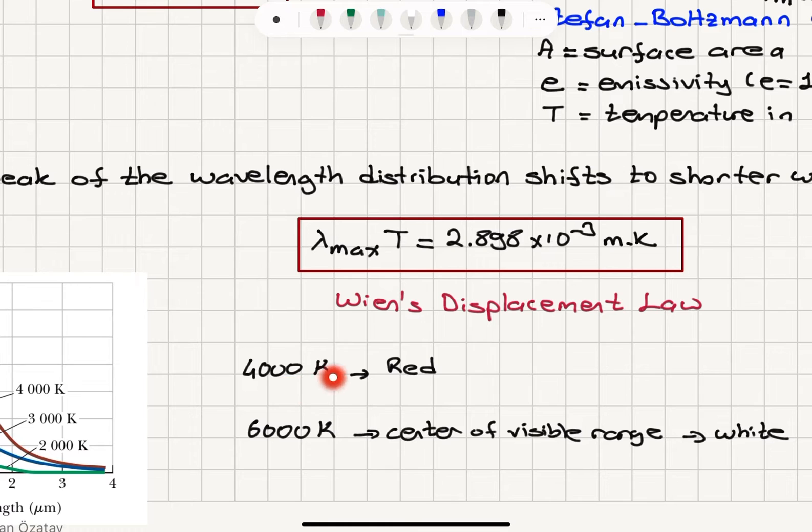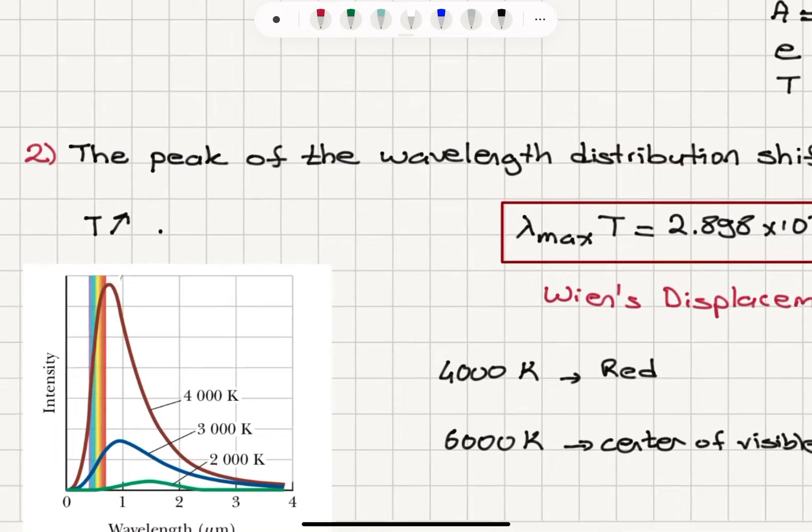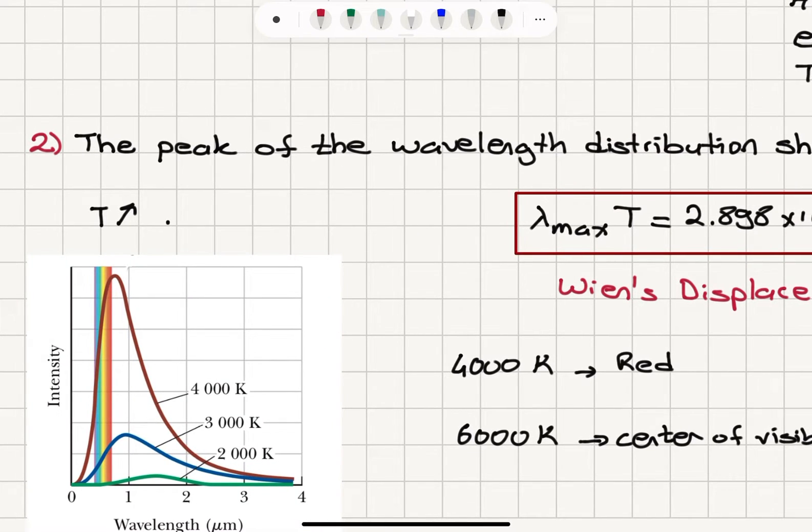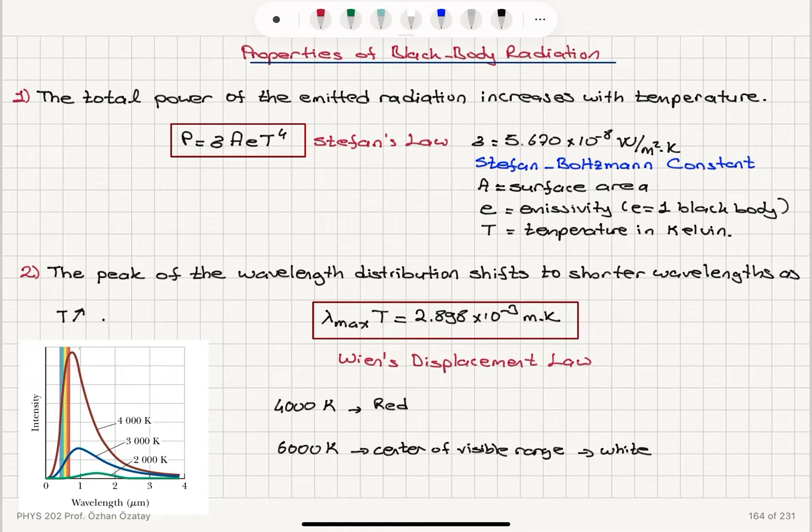As I said, 4,000 Kelvin, this is red. At actually 6,000 Kelvin, it's in the center of the visible range. So that corresponds to about white because you have all the colors contributing to this peak region.